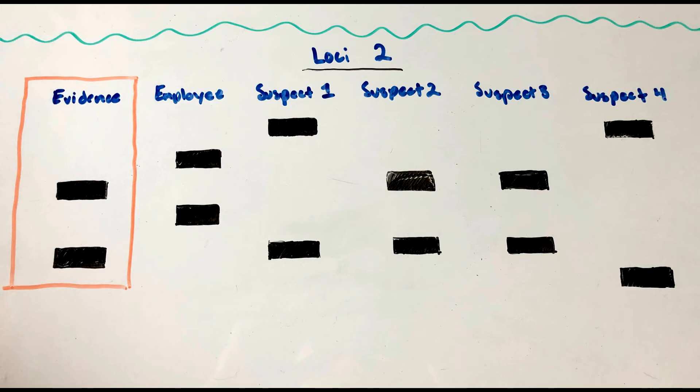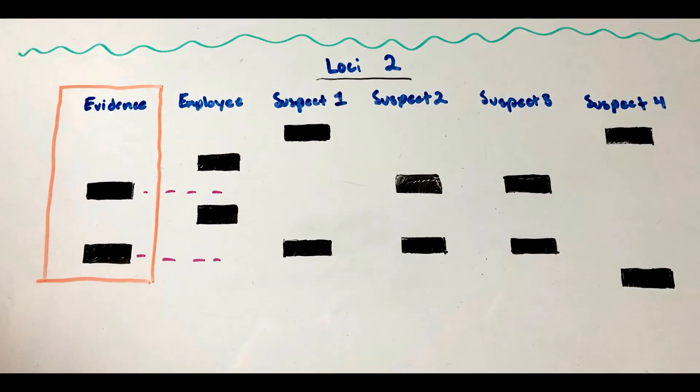This is the second locus. The DNA evidence is in the orange box. Let's see what it matches with. Follow these lines over. It can clearly be seen that the bars from the employee DNA do not match with the DNA evidence.